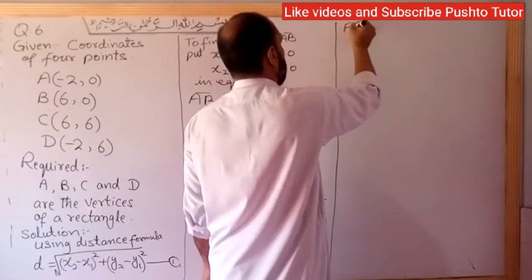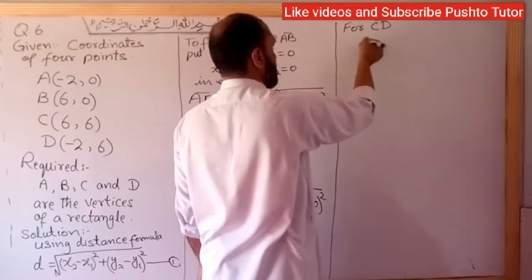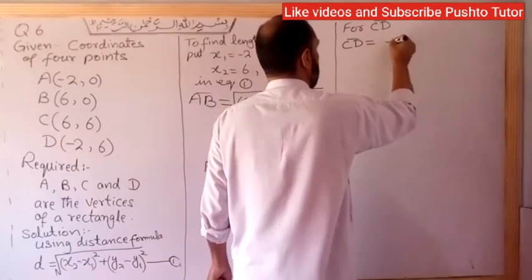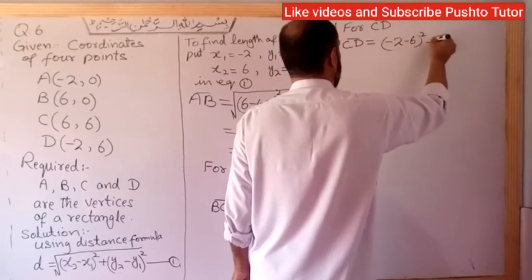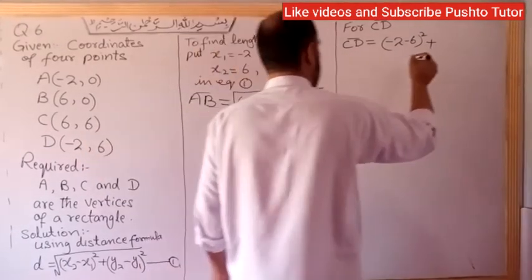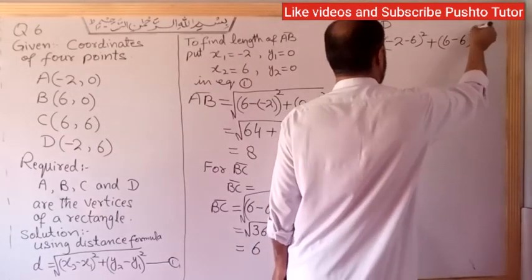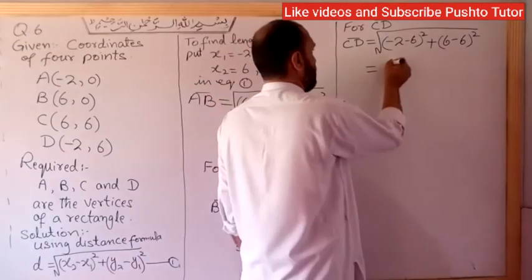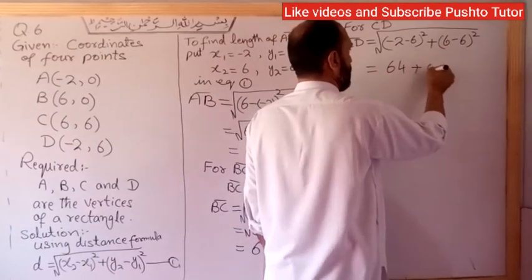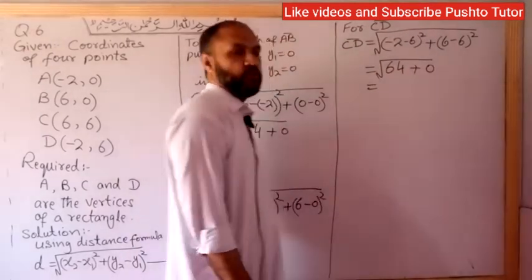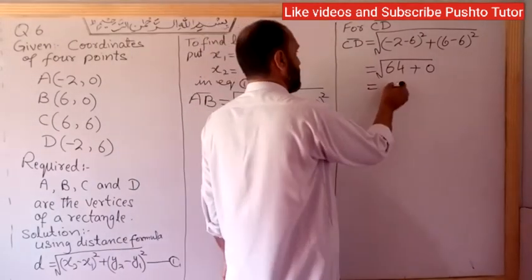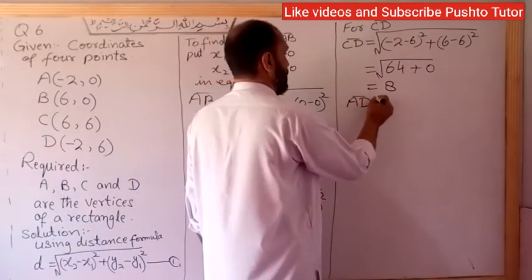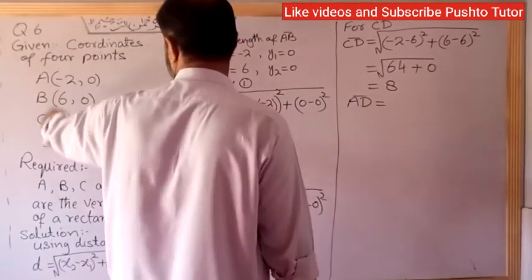Now finding CD. For C(6,6) and D(-2,6): (-2 - 6)² + (6 - 6)² = (-8)² + 0² = 64 + 0 = 64. Under square root of 64 gives CD = 8.